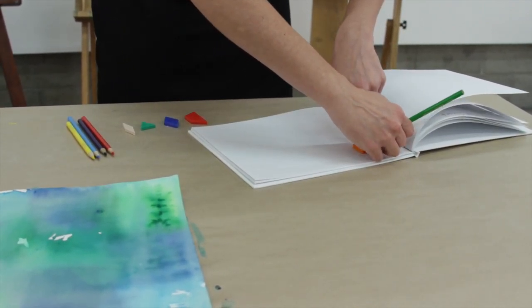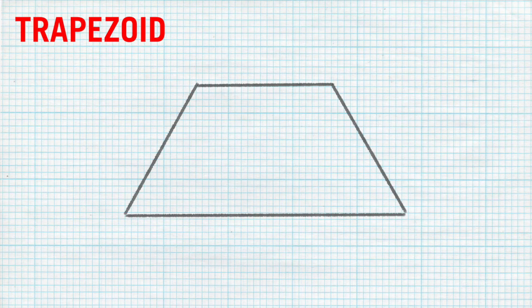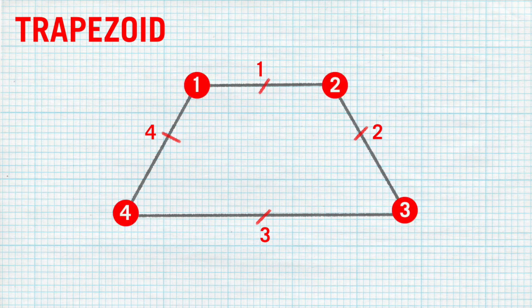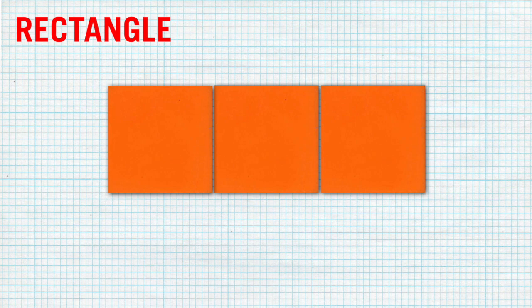Ask your students to do the following: trace each shape in their journals, write the name of each shape next to the traced image, count the sides of each shape, label each side and put a notch on each side, and count the vertices of the shape and label. Discuss the attributes of a pentagon — this can be created from a triangle pattern block with a square. Discuss the attributes of a rectangle, which can be created from multiple square pattern blocks.